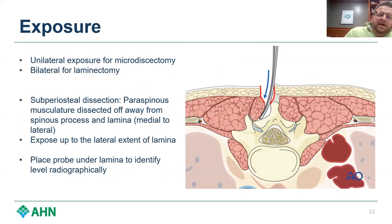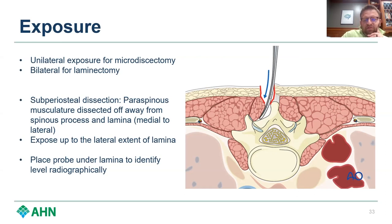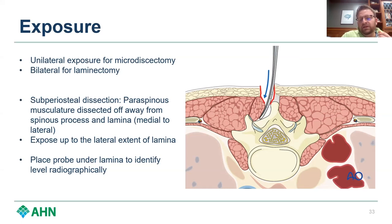When we talk about exposure of the spine for this procedure — unilateral exposure for microdiscectomies, bilateral for laminectomies — we talk about subperiosteal dissection, meaning dissection of the paraspinous musculature away from the spinous process and lamina. That exposes up to the lateral extent of the lamina. You don't really want to get into the facets because if you're not fusing, disrupting the facet capsules can lead to joint instability over time.